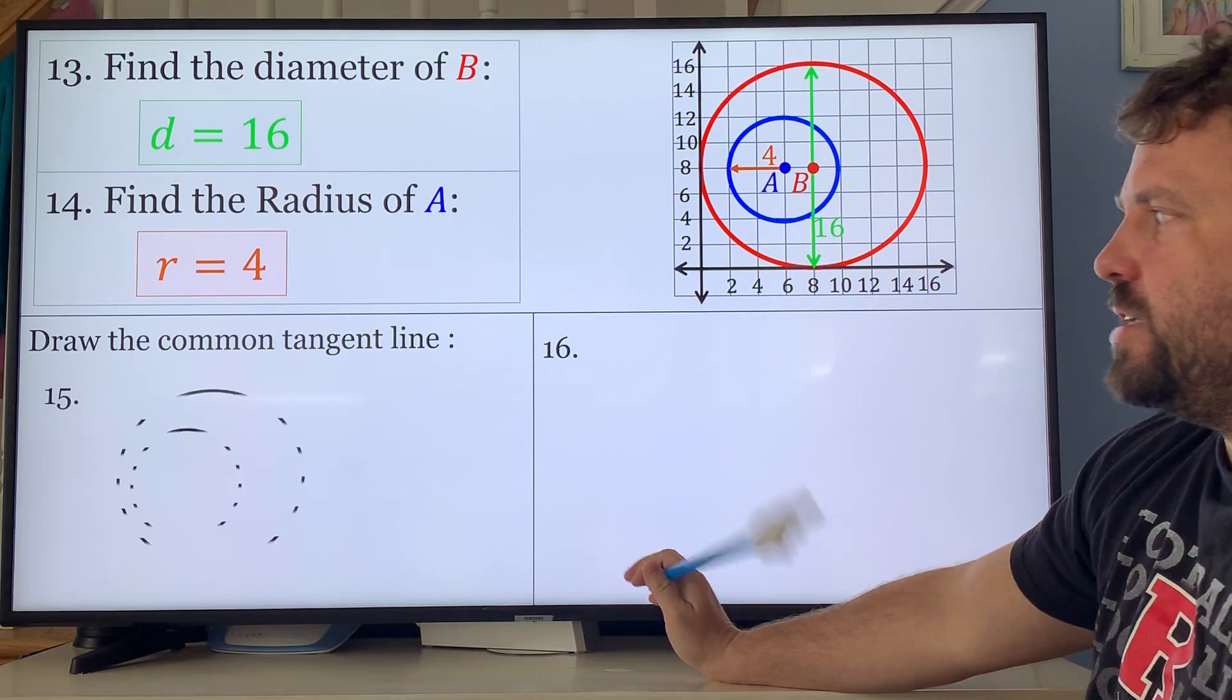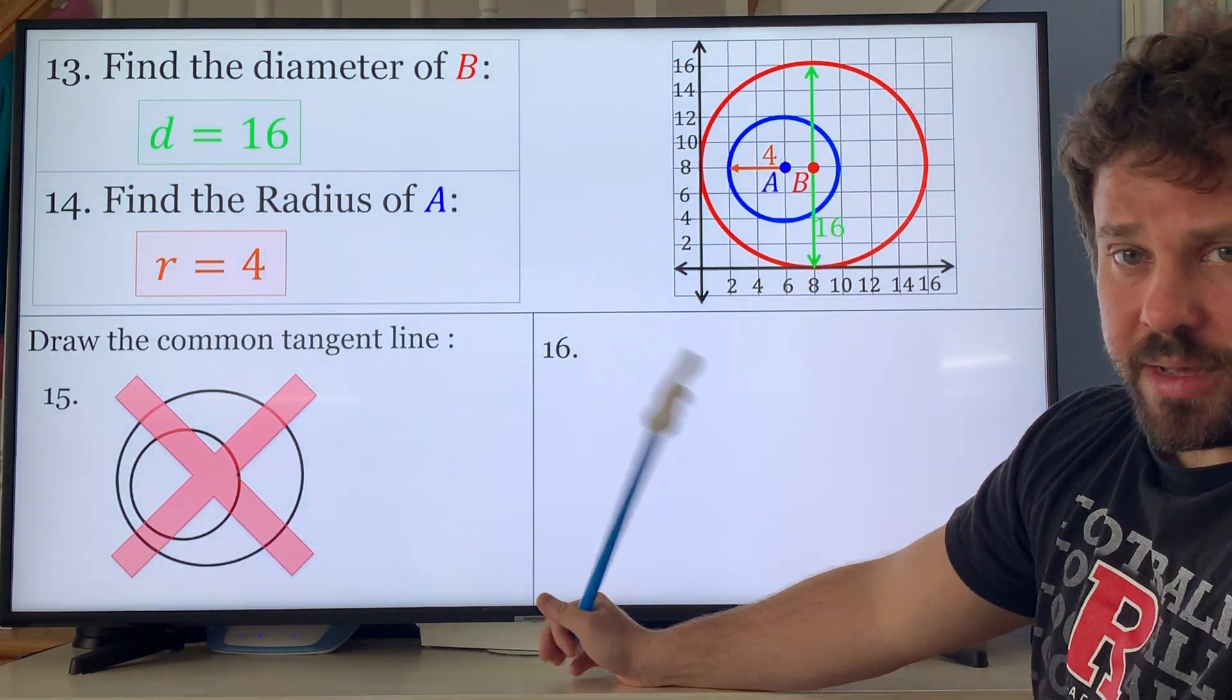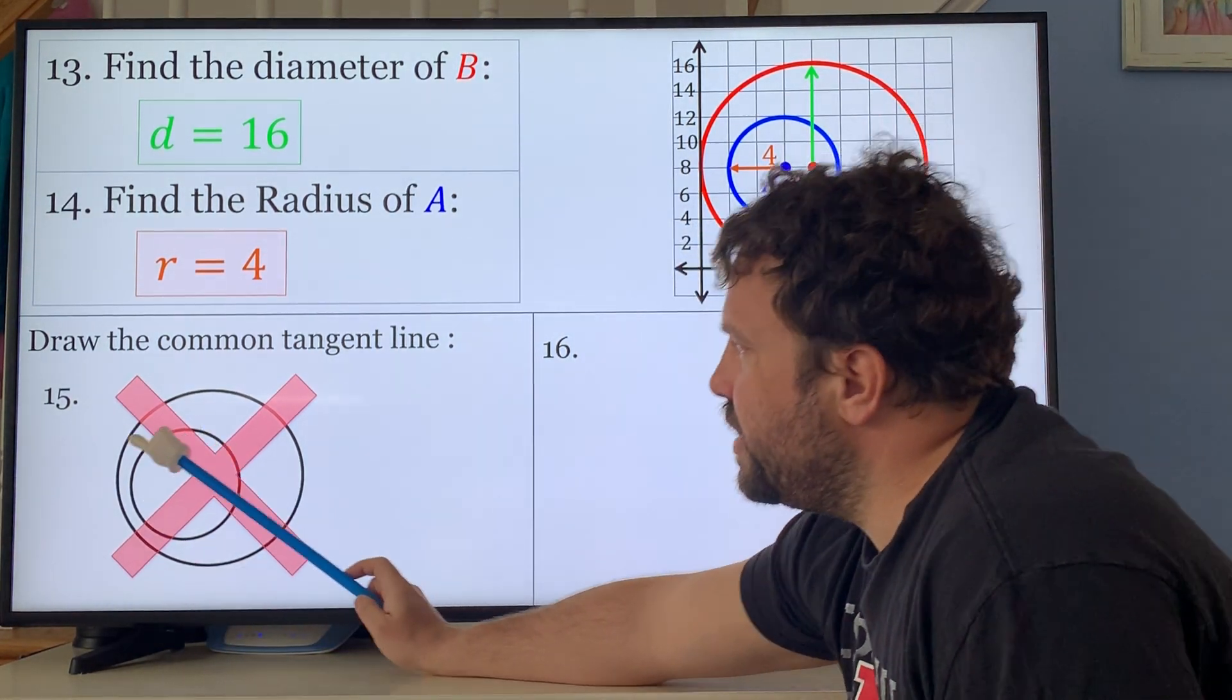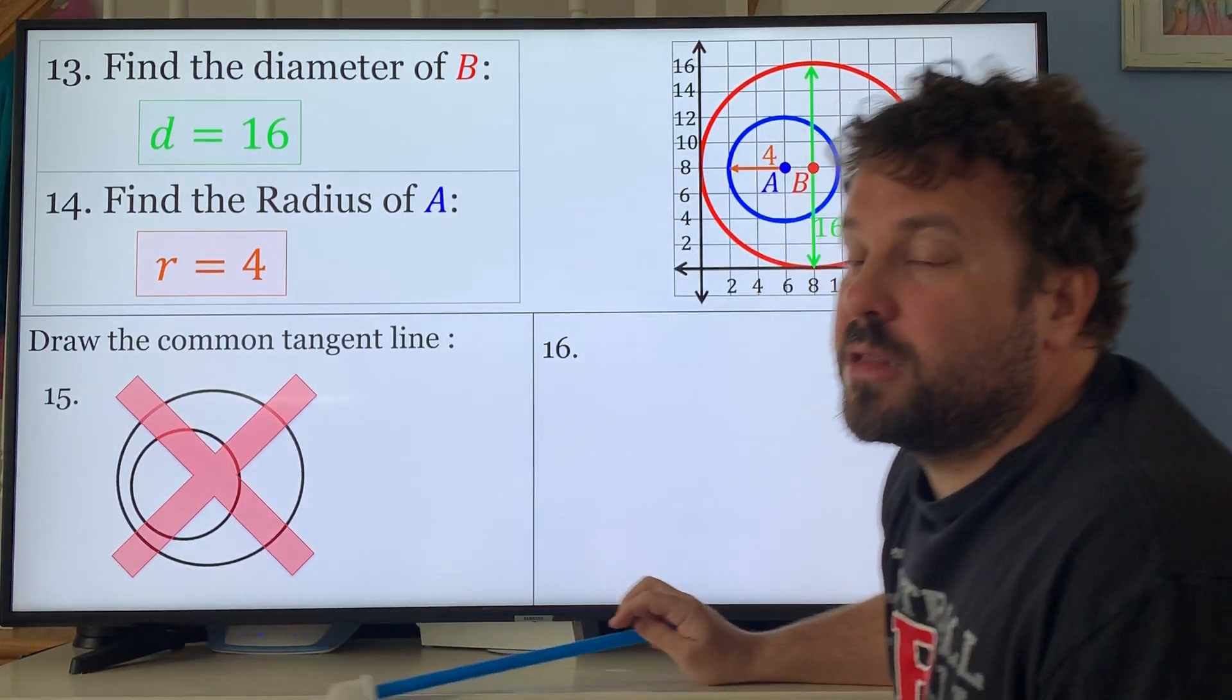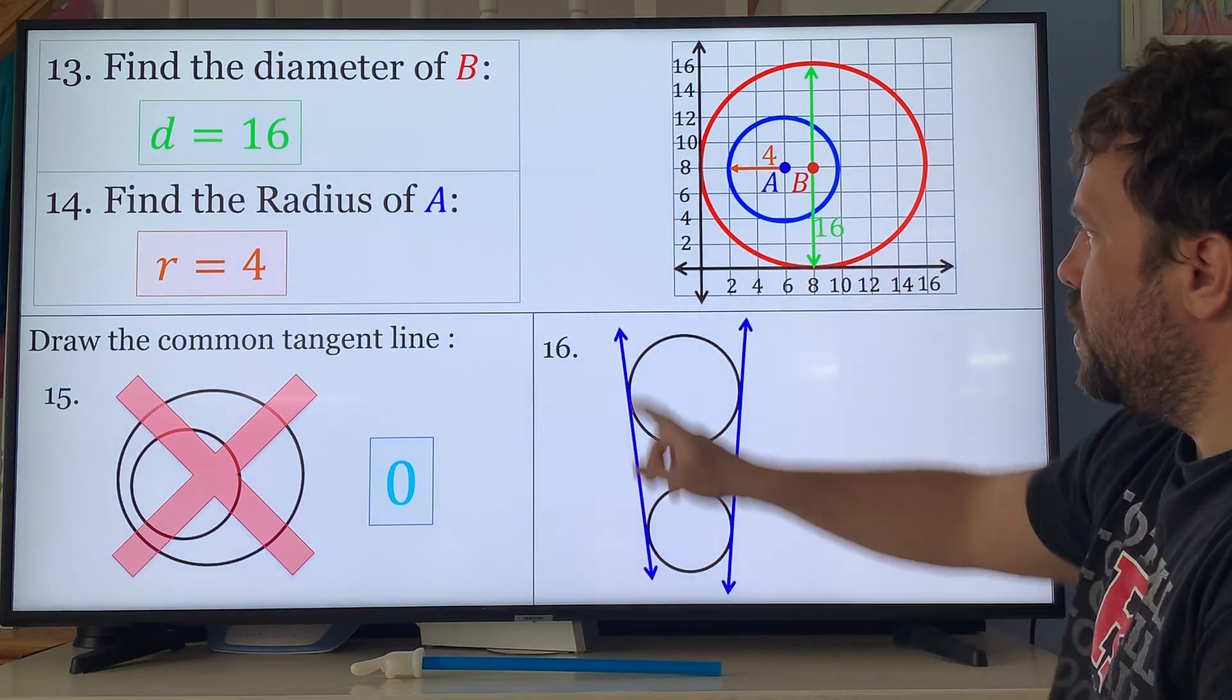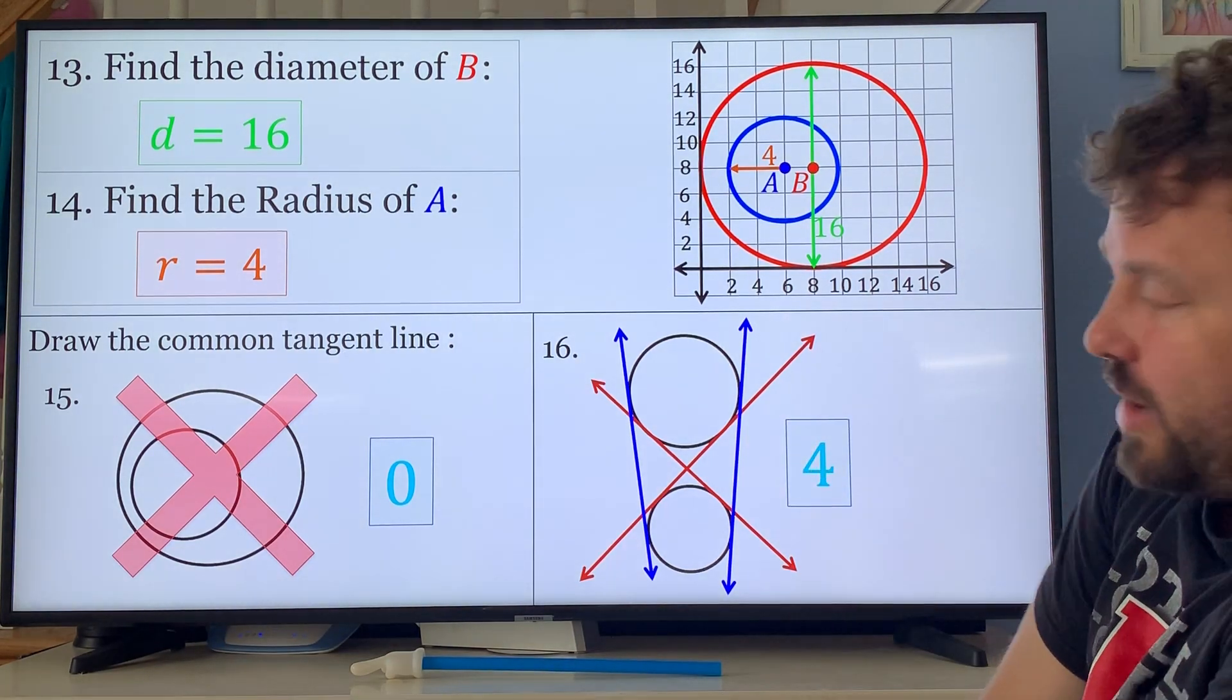Problem 15: draw the common tangent line. How many common tangent lines do those circles have? Zero, no common tangent because there's no way you can draw one line that touches both circles in only one spot. If you did a line through here, it touches the smaller circle in one spot but the larger circle in two. So zero. What about this one? 1 and 2 is wrong because you don't forget your 3 and 4. Your answer is 4. If these were touching it'd be 3, if they were overlapping there'd only be 2.